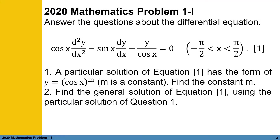The 2020 Mathematics Problem 1-1 is given as: answer the questions about the differential equation — cosine of x times the second derivative of y with respect to x, minus sine of x times the first derivative of y with respect to x, minus y over cosine of x equals 0, where x is between negative pi over 2 and pi over 2. Let us denote this as equation 1.